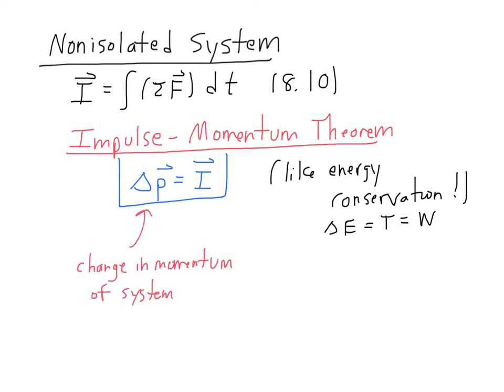This is similar to the impulse-momentum theorem, because here we have the change in momentum of the system, just like here we have the change in energy. And here we have the impulse delivered to the system, which is very much like the work done on the system. Over here we have things which are internal to the system, the change in momentum. And here we have things which are external, the impulse delivered to the system in the same way that forces deliver work to a system.